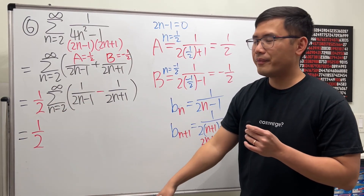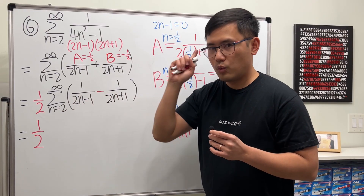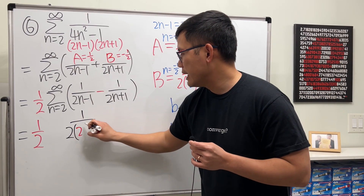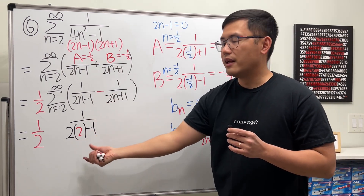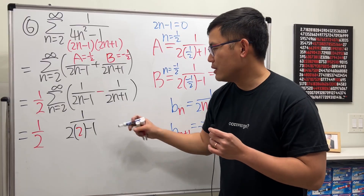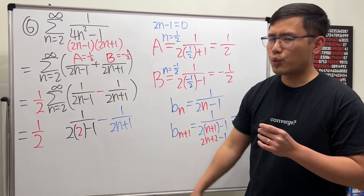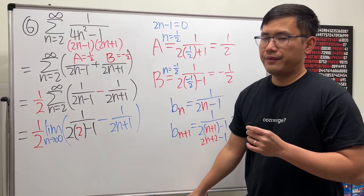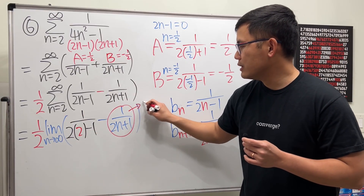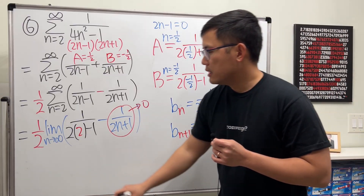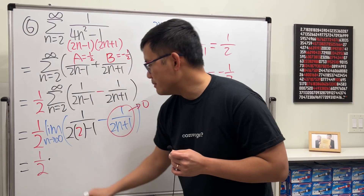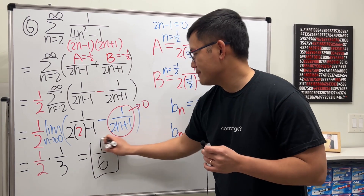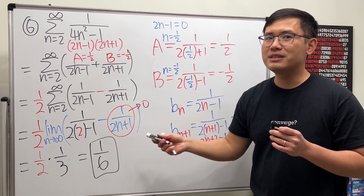Now do the quick telescoping method: write one half out front, start with n equals two and plug into the first term one time to get one over two times two minus one, then subtract one term: minus one over two n plus one. Take the limit as n goes to infinity — this goes to zero. So the answer is one half times one over three, which equals one over six. And that is how you do telescoping series the fast way.